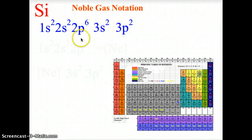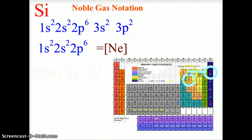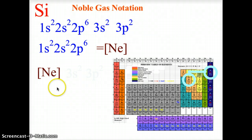We know that 1s2 2s2 2p6 is the same as neon, the noble gas. Going up one row to the noble gas, neon is the noble gas above silicon. We can use neon in brackets to represent 1s2 through 2p6, then write 3s2 3p2 as the core notation or noble gas notation for silicon.